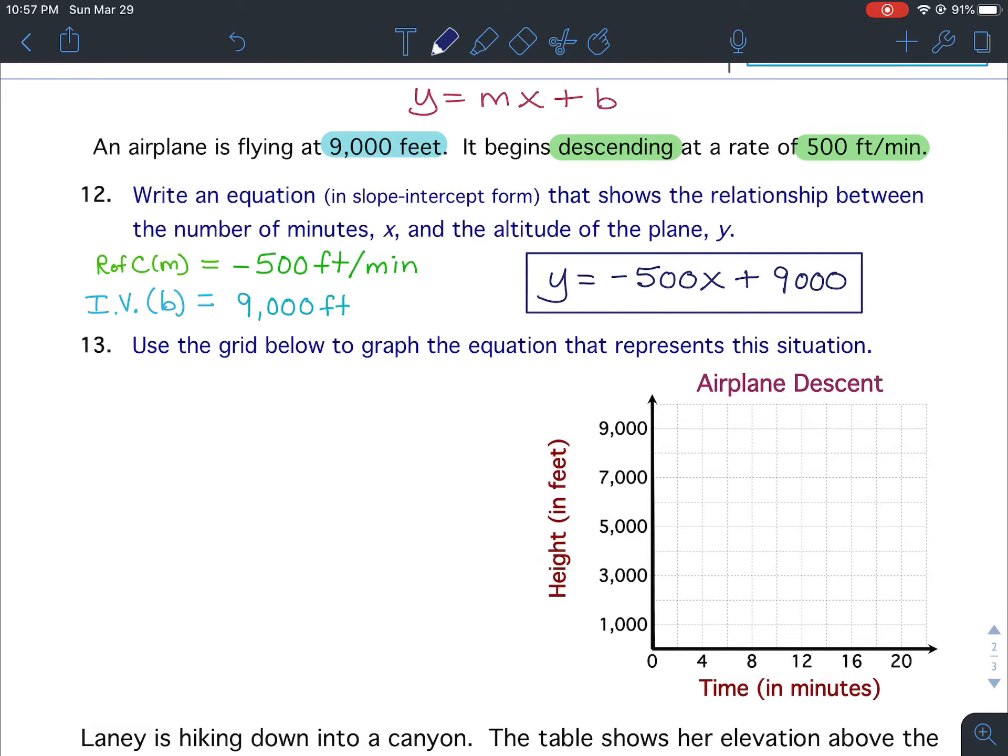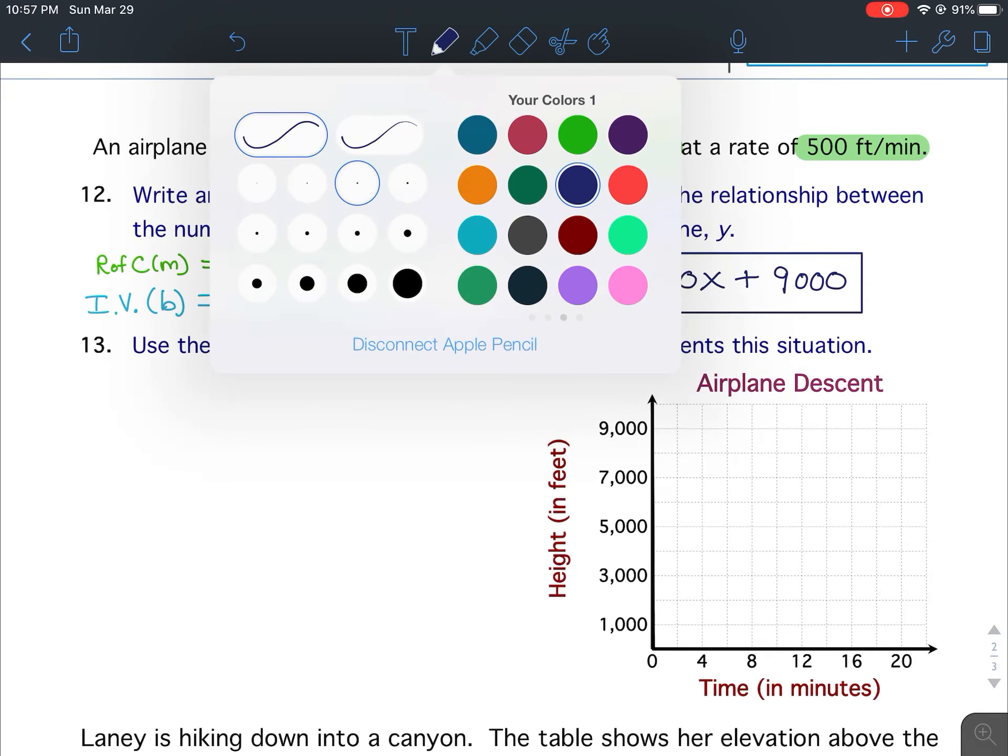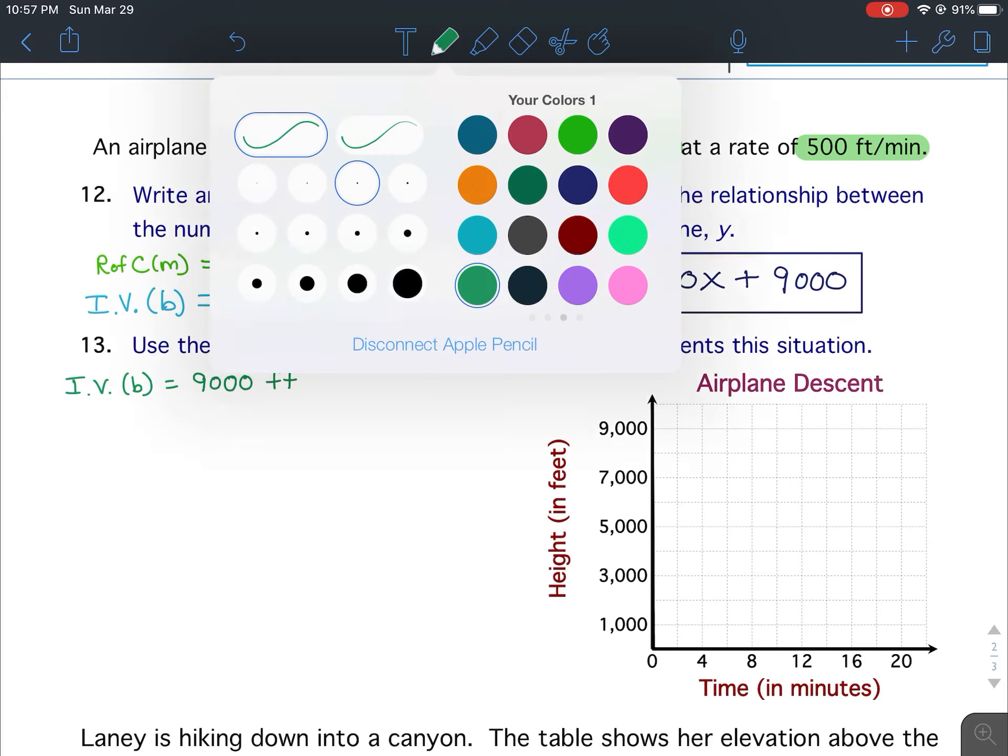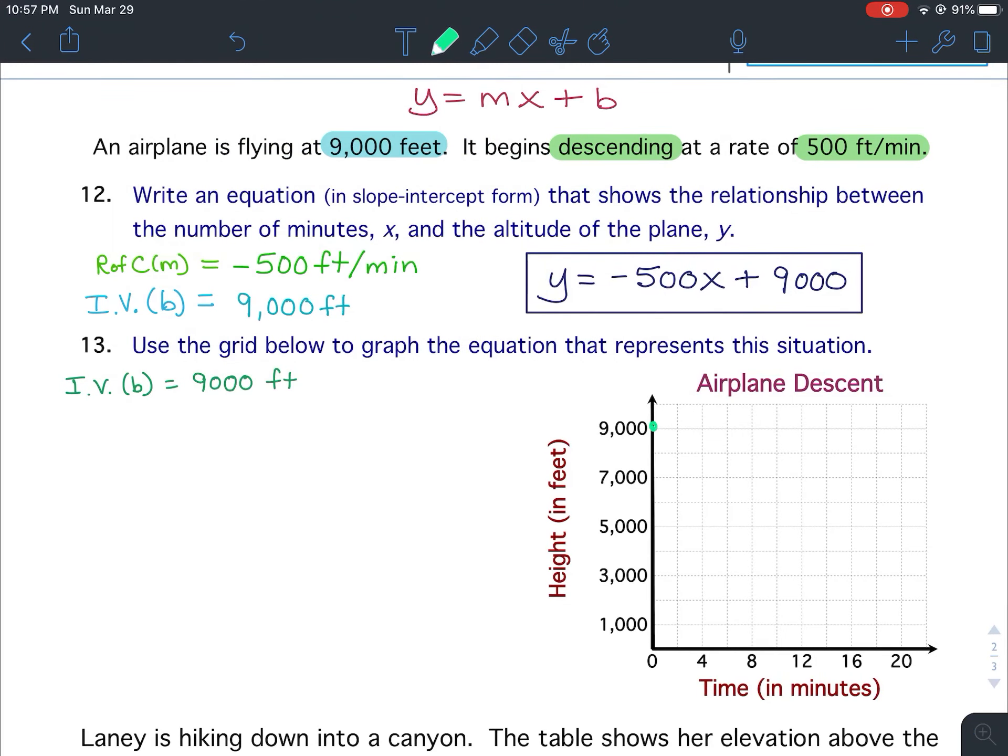Okay, so now we are going to take that information, and we are going to use this grid for number 13 to graph the equation that represents the situation. Well we know that the y-intercept, the initial value, is 9,000. So our initial value, our y-intercept, is 9,000 feet. So our starting point over here on the graph will be at 9,000 feet.